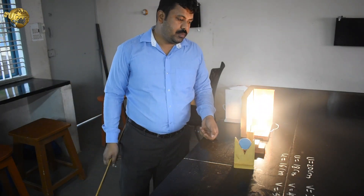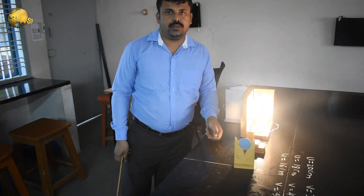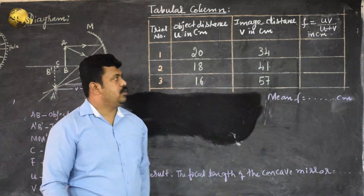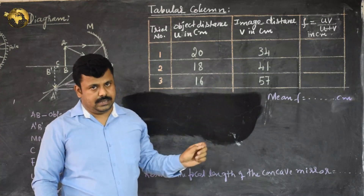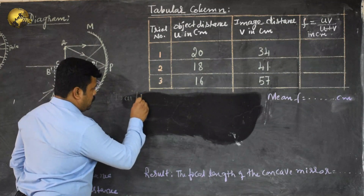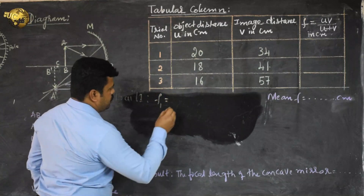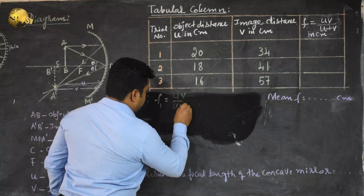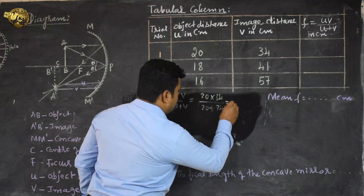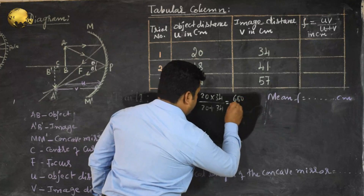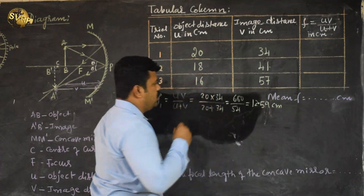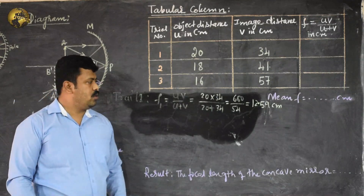We will now complete the tabular column and go for the calculations to find the exact focal length. F1 equals UV divided by U plus V, which is 20 multiplied by 34 divided by 20 plus 34. That gives 680 divided by 54, and the value comes out to be 12.59 centimeters.